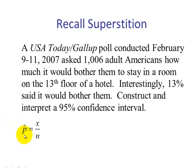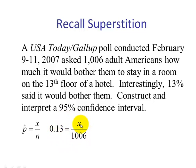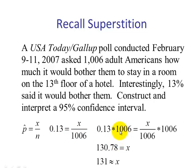Using the formula P-hat equals X over N, we substitute what we know: P-hat is 0.13 and N is 1,006. We can solve for X by multiplying both sides by 1,006. Doing that, we get X equals 13% of 1,006, which is 130.78, rounded to 131. So our X is 131 and our N is 1,006.